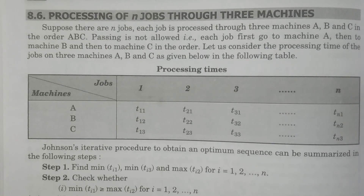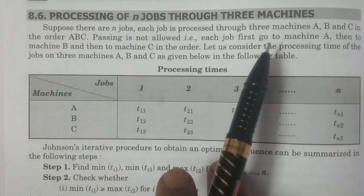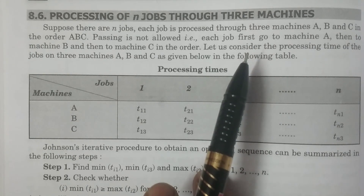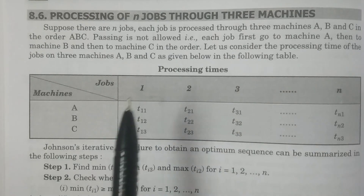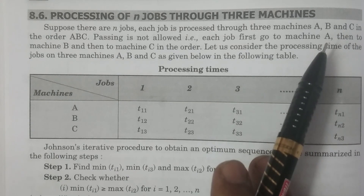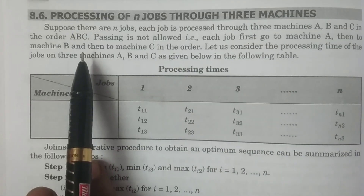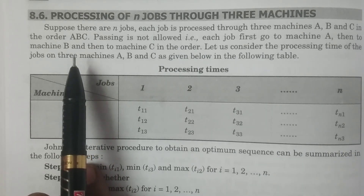Welcome to BSc Statistics students. In this class I explain processing of n jobs through three machines. We have discussed two machines, now three machines. Here we consider three particular machines, for example A, B, C, to be considered in the order A, B, C. The order may change, but the procedure is going to be explained through order A, B, C.